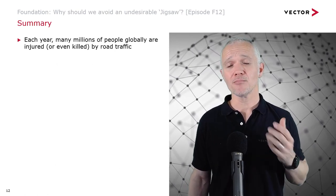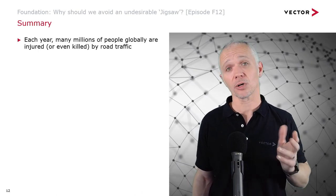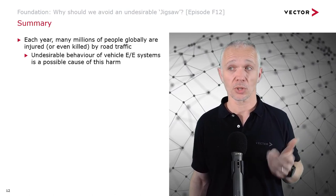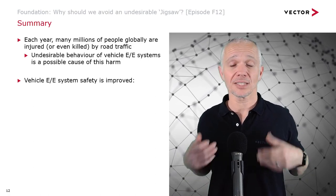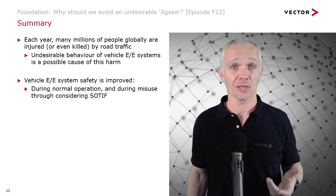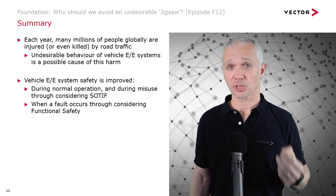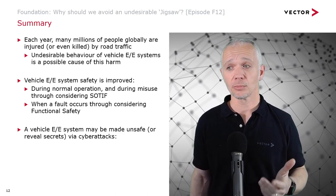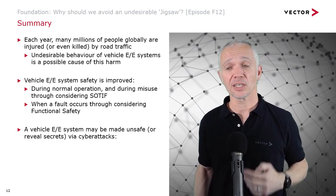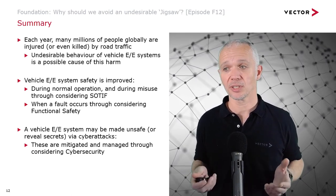As a summary: each year many millions of people are injured globally or killed by road traffic, and undesirable behaviour of vehicle EE systems is a possible cause of that harm. Vehicle EE system safety is improved during normal operation and misuse through considering SOTIF, and improved when faults occur through considering functional safety. A vehicle EE system may also be made unsafe or reveal secrets via cyber attacks, which are mitigated and managed through considering cyber security aspects during design.